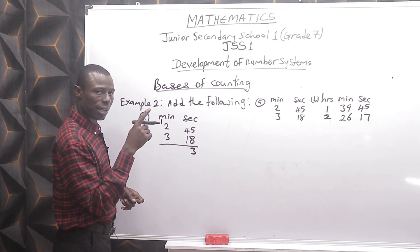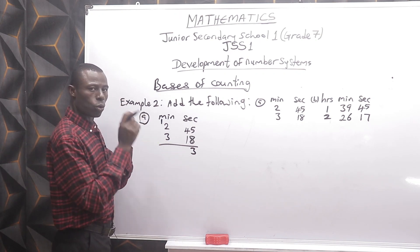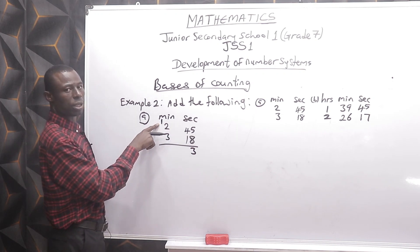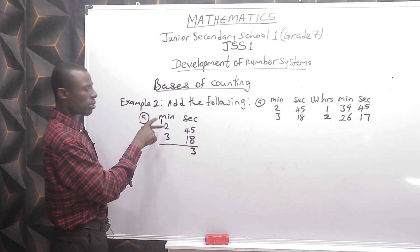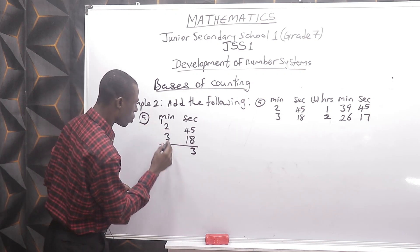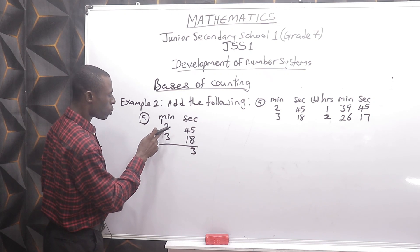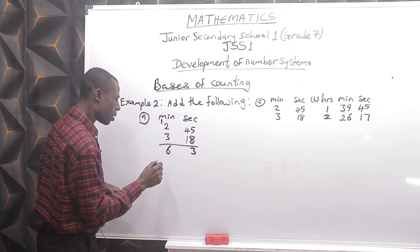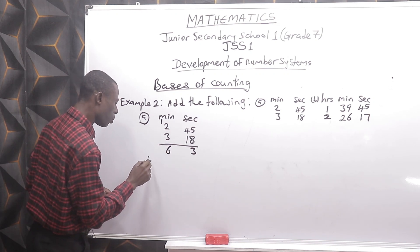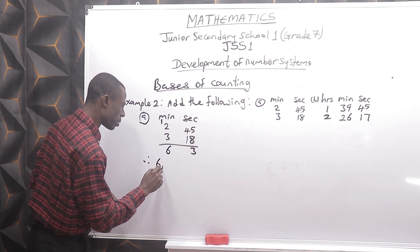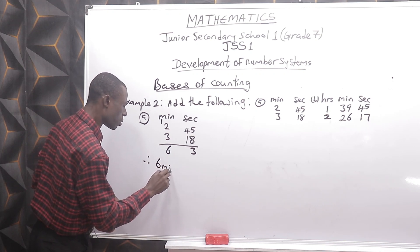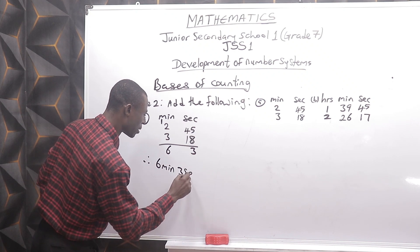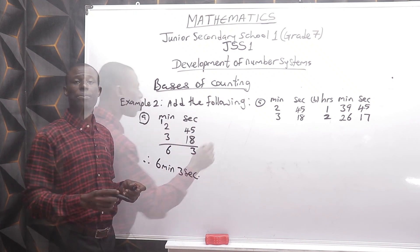The 60 seconds is rounded up to 1 minute and transferred to the minutes section. So 1 plus 2 is 3, plus 3 gives 6. Therefore we have 6 minutes and 3 seconds. That is the answer for question A.